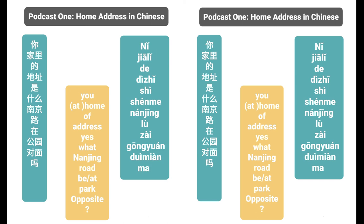First time. 你家里的地址是什么？我家里的地址是南京路一百三十五号。在公园对面吗？是的。